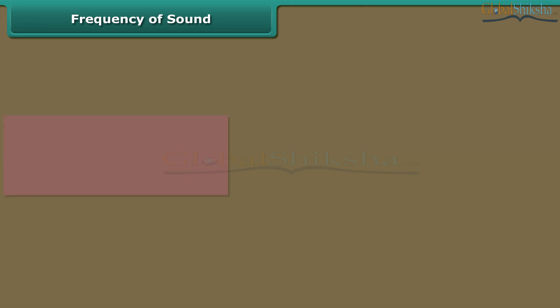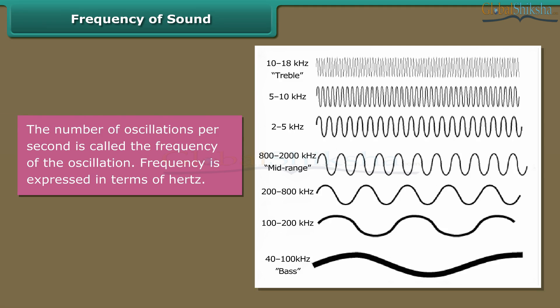Frequency of sound. The number of oscillations per second is called the frequency of the oscillation. Frequency is expressed in terms of hertz.